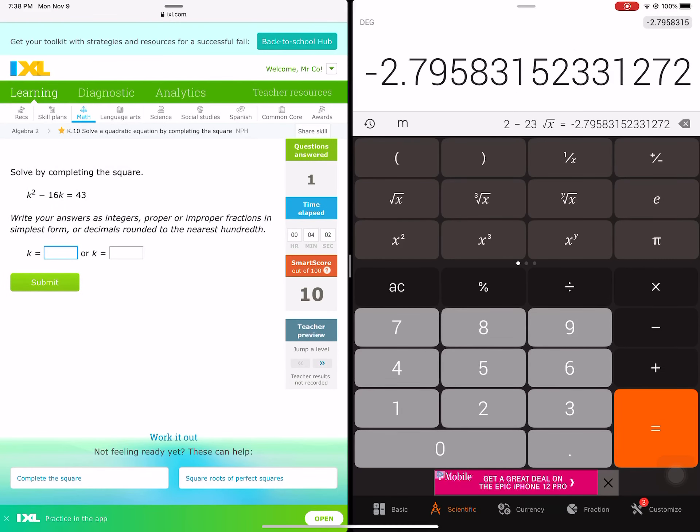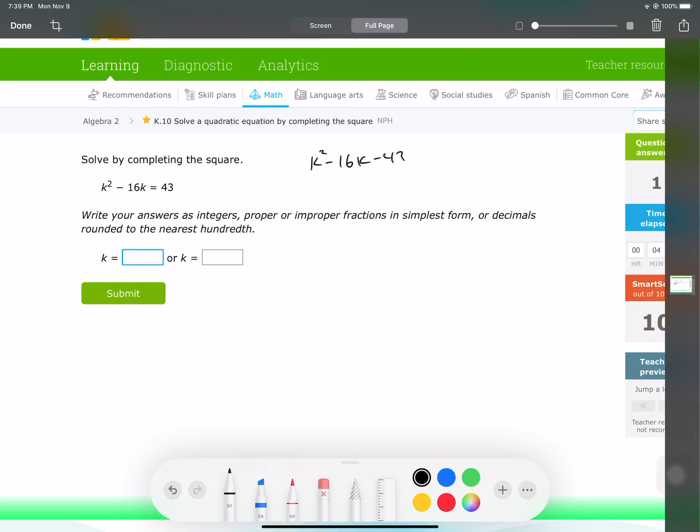Okay, let's do the same thing over here. In this problem, they put 43 on the other side, and you don't need to move it, but I'm going to move it just because that's how we've been working it. So I'm going to write k squared minus 16k minus 43 equals 0. And we find our perfect square, which is k minus 8, because we always divide the middle term by 2. And then our perfect square is going to be plus 64 minus 64, because 8 squared is 64. We combine that to become negative 64 minus 43 is negative 107.